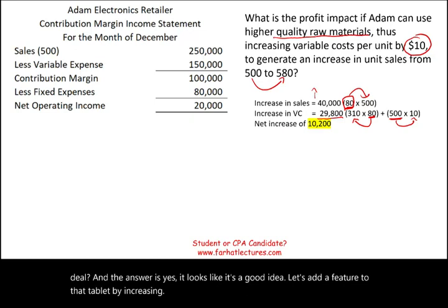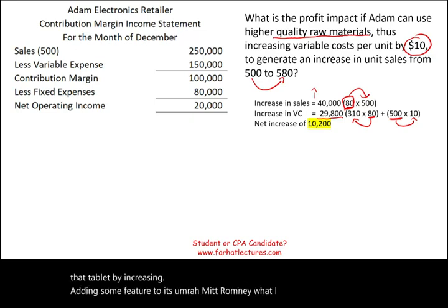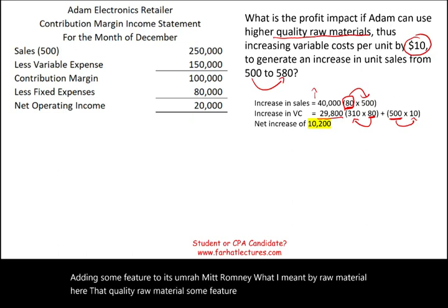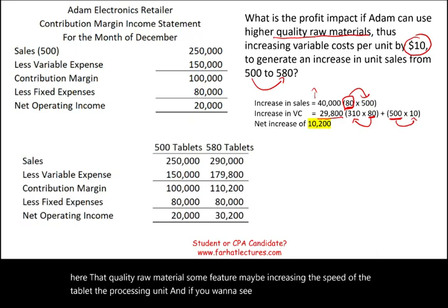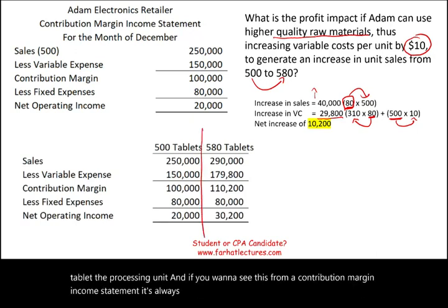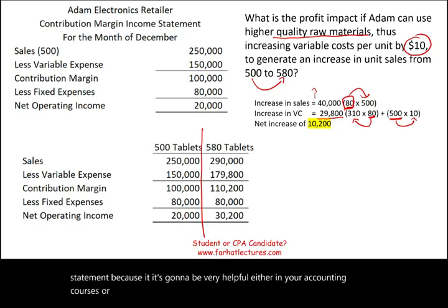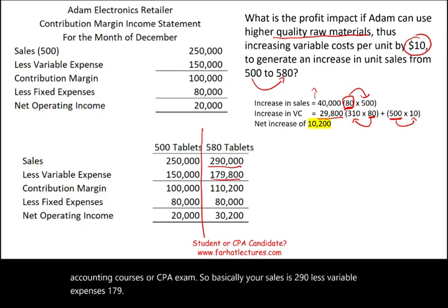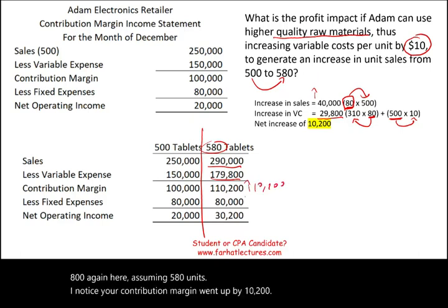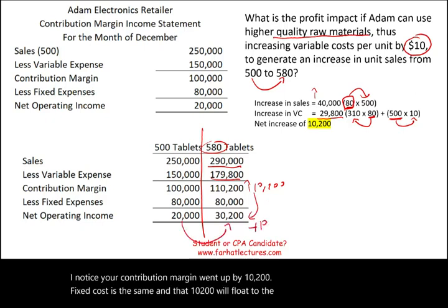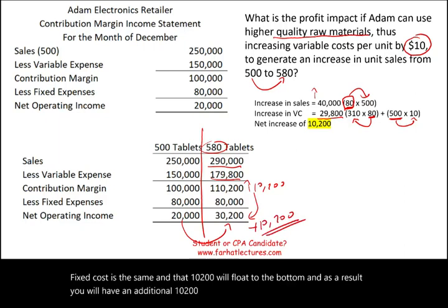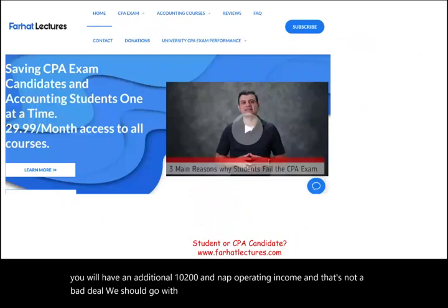Is this a good deal? Yes — it looks like a good idea to add a feature to the tablet, perhaps increasing the processing speed. On the contribution margin income statement: sales = $290,000, variable expense = $179,800, assuming 580 units. Contribution margin increased by $10,200, fixed cost is the same, so that $10,200 flows straight to net operating income. We should go with this option.